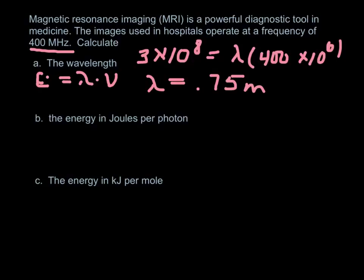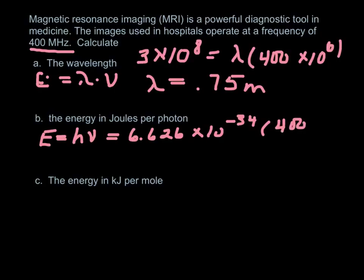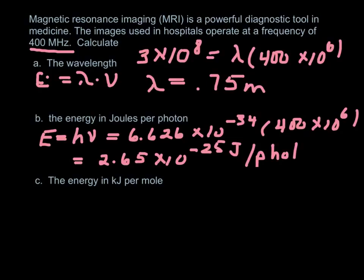Now, all frequencies and wavelengths have energy associated with them. And the energy is pretty easy to calculate. It's just Planck's constant times the frequency. And again, you don't have to memorize this constant. You just need to be able to use it. So this times 10 to the minus 34, times 400 times 10 to the 6th. So this gives us a very tiny energy, 2.65 times 10 to the minus 25 joules per photon. And remember, a photon is just kind of a bundle of energy that acts like a particle.